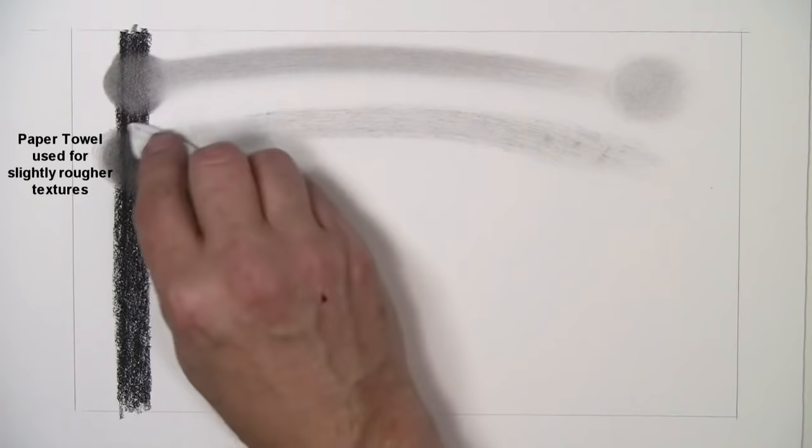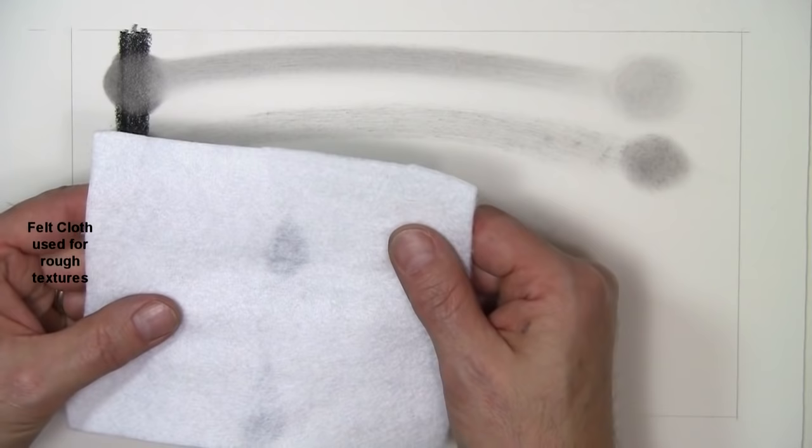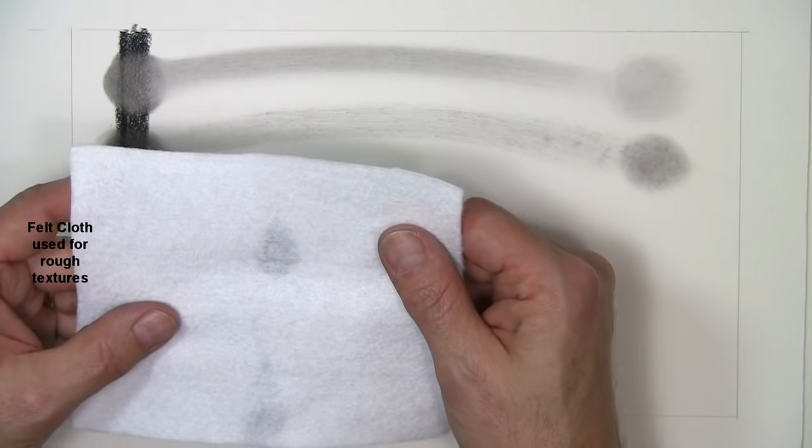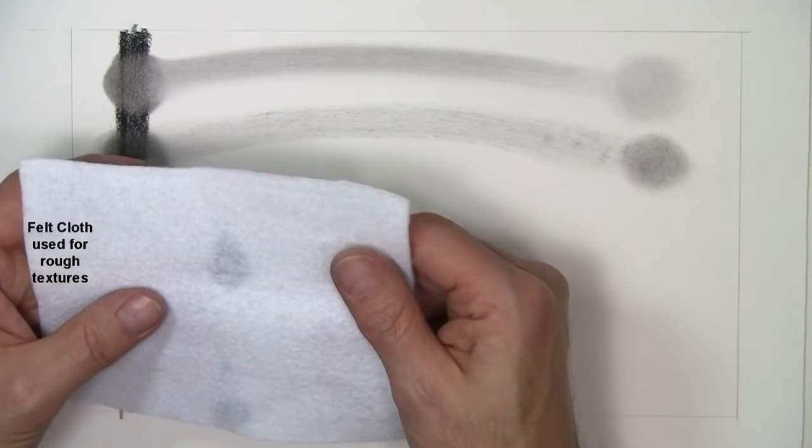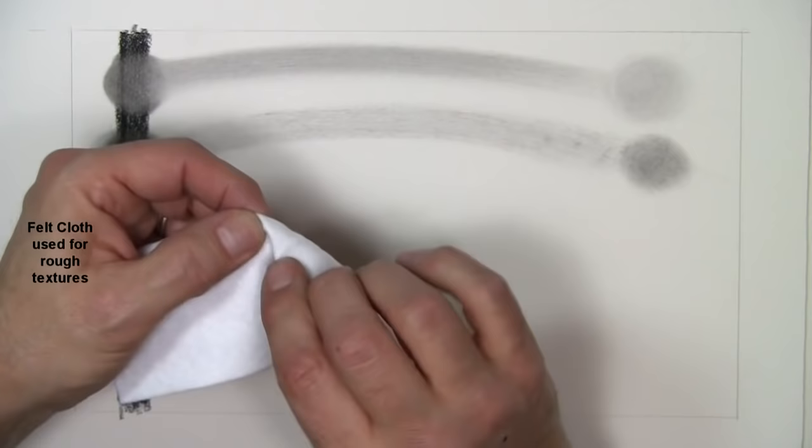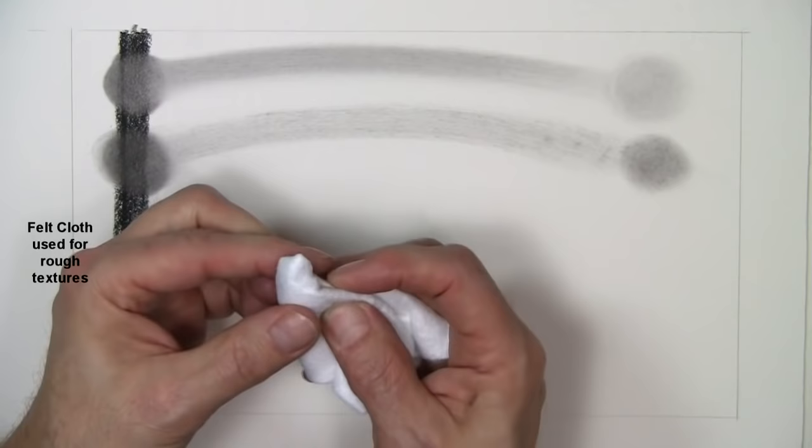This next one I want to show you is a piece of felt. You can buy these felt squares at just about any fabric store or even Walmart or Kmart. They come in a 12 inch by 12 inch square. I usually cut into quarters. Now another reason I fold these blending tools like this is it creates more of a cushion between my finger and the paper and keeps me from pushing too hard, which can be a problem.